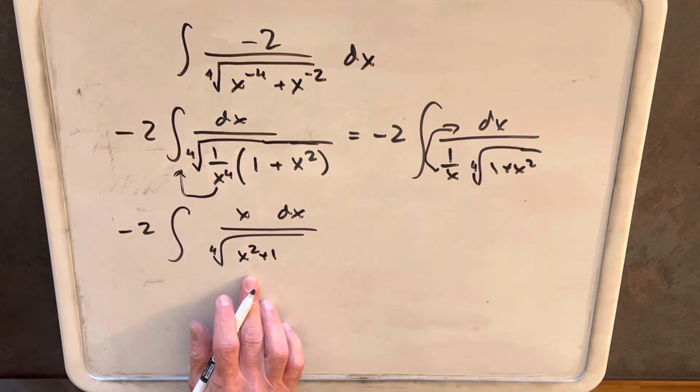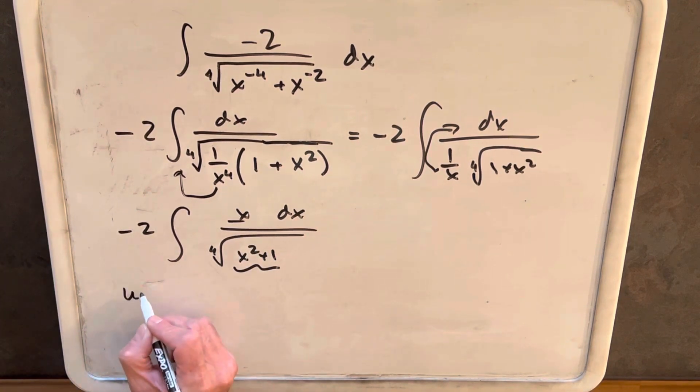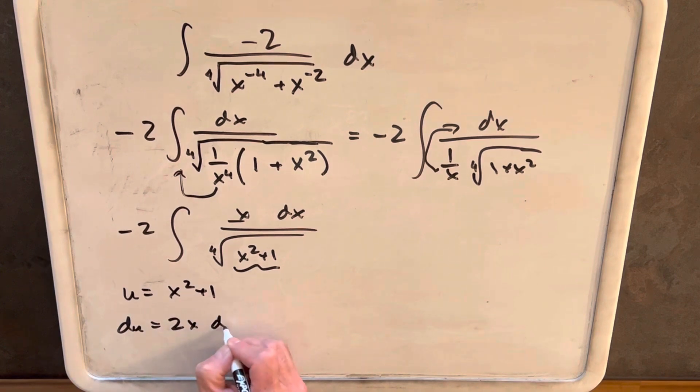Now we're in good shape for a u substitution, as you can see the derivative of this is going to be really close to this. So let's do that. We'll call u equals x squared plus 1, du equals 2x dx.